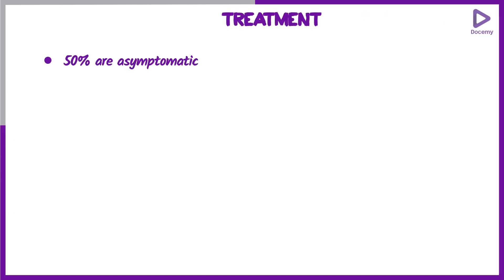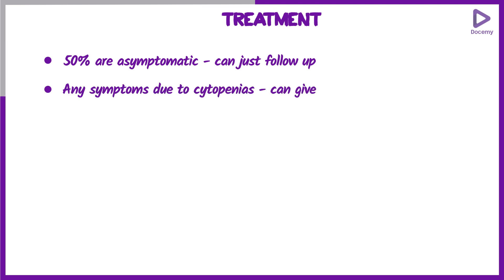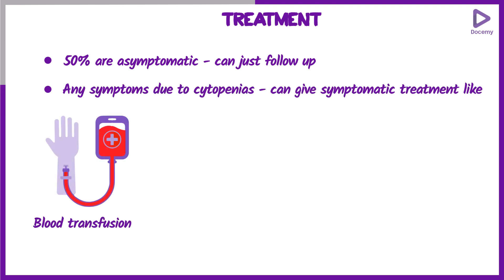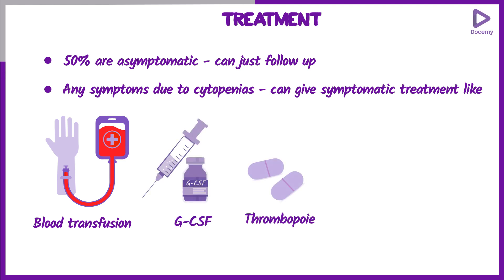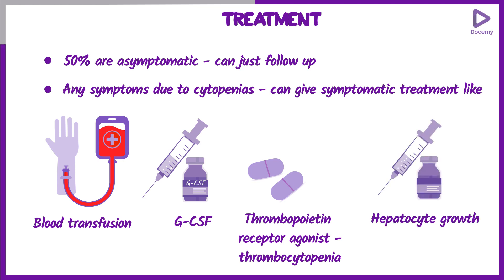Regarding treatment, 50% of patients are asymptomatic and can simply be followed up. If there are symptoms due to cytopenias, symptomatic treatment is used, such as blood transfusion, G-CSF for neutropenia, thrombopoietin receptor agonists for thrombocytopenia, hepatocyte growth factors, and erythropoietin.